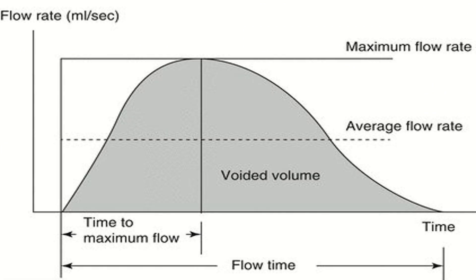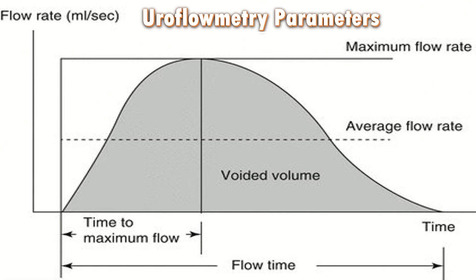Here we will talk about the uroflowmetry parameters. The first is voided volume in ml — the total volume collected in the measuring jar during the voiding or recording period. The second is average flow rate in ml per second — the average of the total flow during the voiding time. The third is maximum flow rate in ml per second — the maximum value of the free flow rate during the voiding period, also called the peak flow rate.